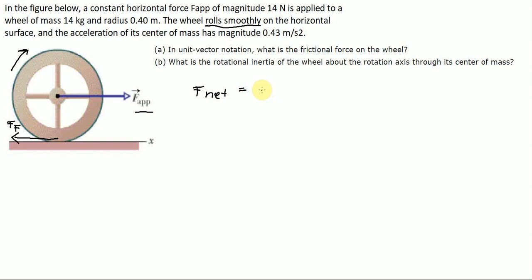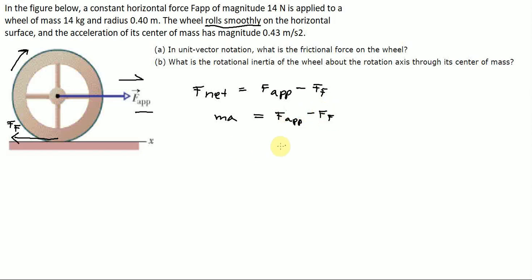F_net equals the force going in this direction, so it's going to be force applied minus force of friction. F_app minus f_f. And we can say ma equals applied force minus force of friction. We know what the applied force is, so ma equals 14 minus f_f.